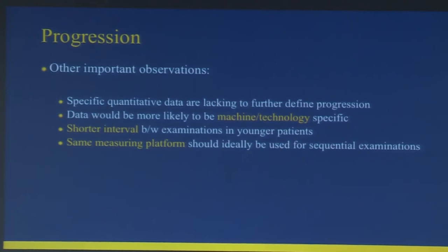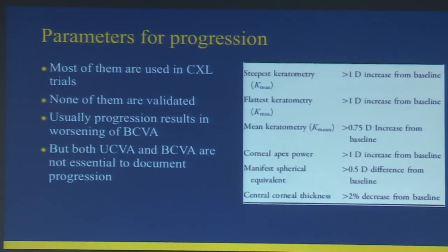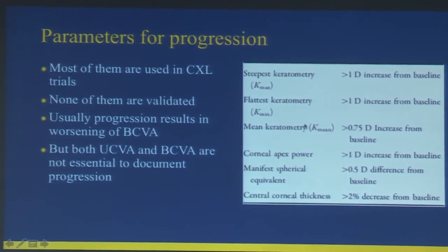When doing mapping, you should always use the same machines. When evaluating younger patients, follow-up should be every three to four months rather than six months. All parameters for progression used in cross-linking trials — most commonly Kmax and corneal pachymetry — have not been validated.